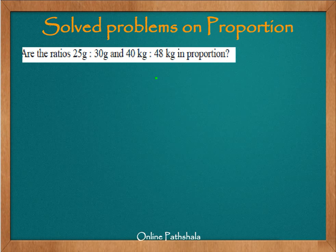Let us solve some problems on proportion. The first question asks: are the two ratios 25 grams to 30 grams and 40 kilograms to 48 kilograms in proportion? Two ratios are in proportion only when their lowest form or simplest representation are the same, or we can prove that they are equivalent ratios. Let us start with the first ratio.